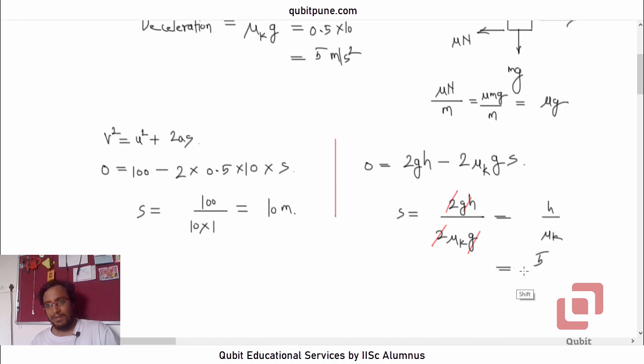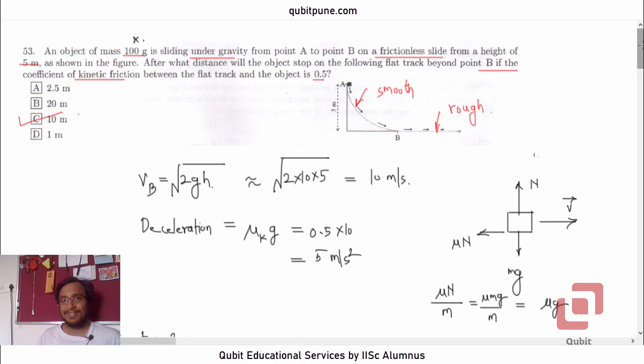So, what remains is h upon mu k. What is h? 5. What is mu k? 0.5. So, s must be 10. Right? So, yeah, that's 10 meters. Option c.